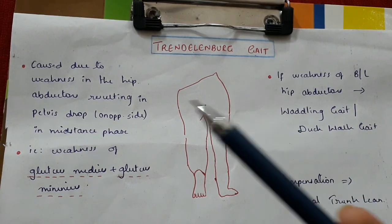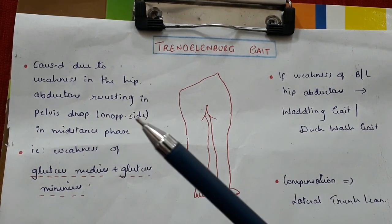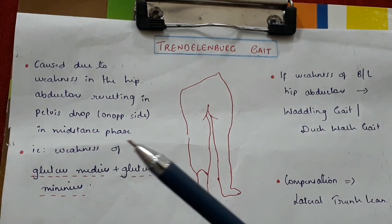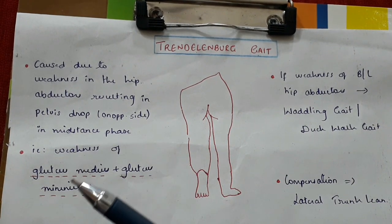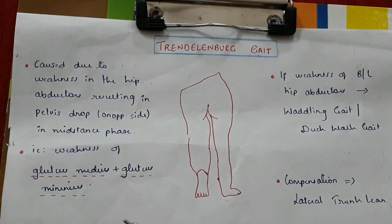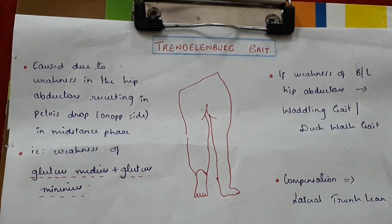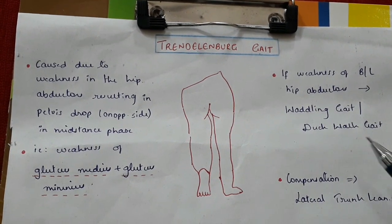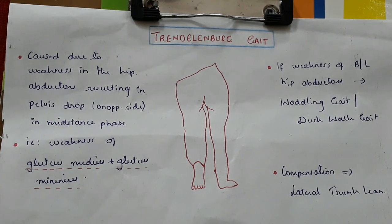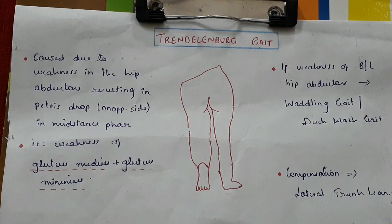Trendelenburg gait is caused due to weakness in the hip abductors, resulting in pelvis drop on the opposite side during the mid-stance phase — specifically weakness of the gluteus medius and gluteus minimus muscles. If bilateral hip abductor weakness is present, it is called a waddling gait or duck walk gait. The patient compensates by lateral trunk lean.